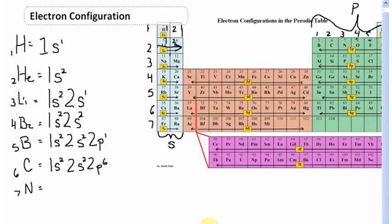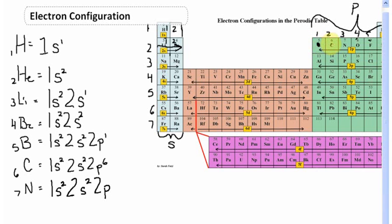Nitrogen has seven protons, therefore seven electrons. On the first energy level, we place two electrons in the s orbital — 1s2. That leaves five electrons. On the second energy level, two go into the s orbital — 2s2. That leaves three electrons, which go into the p orbital at P1, P2, and P3 — 2p3. Nitrogen's electron configuration is 1s2 2s2 2p3.